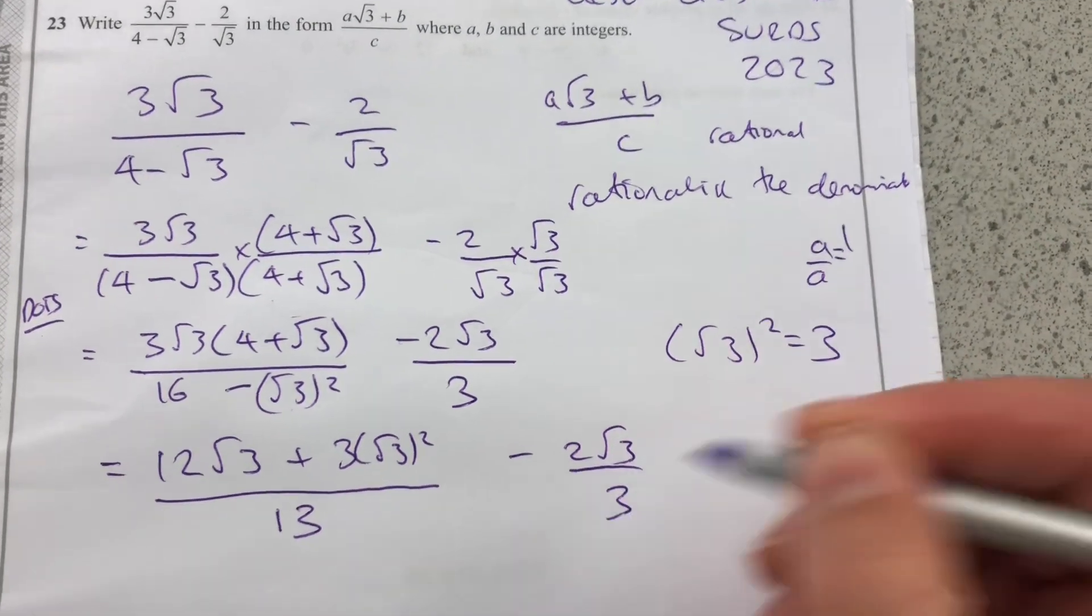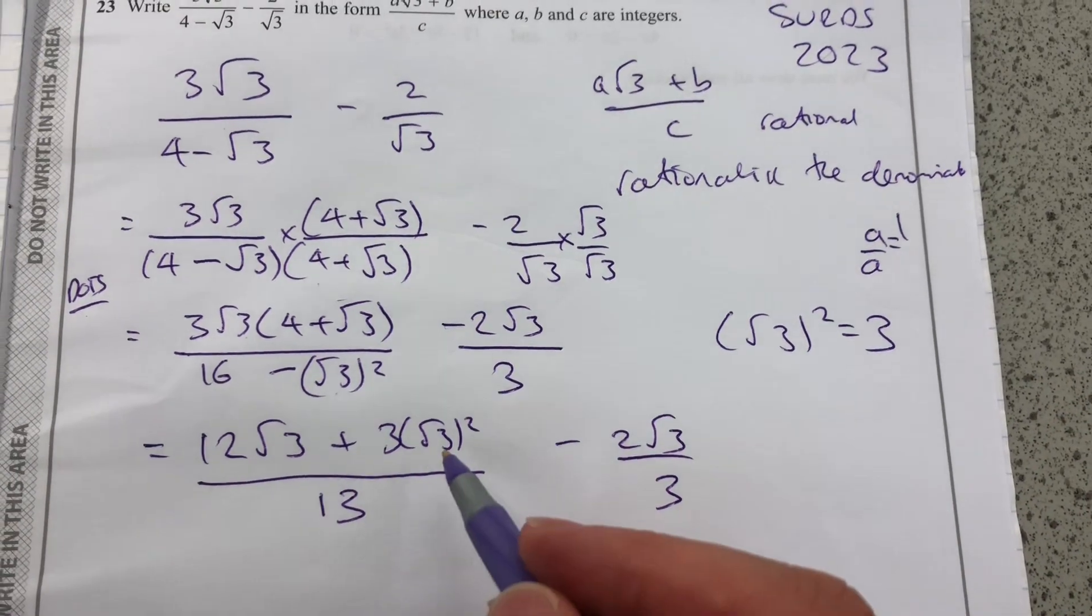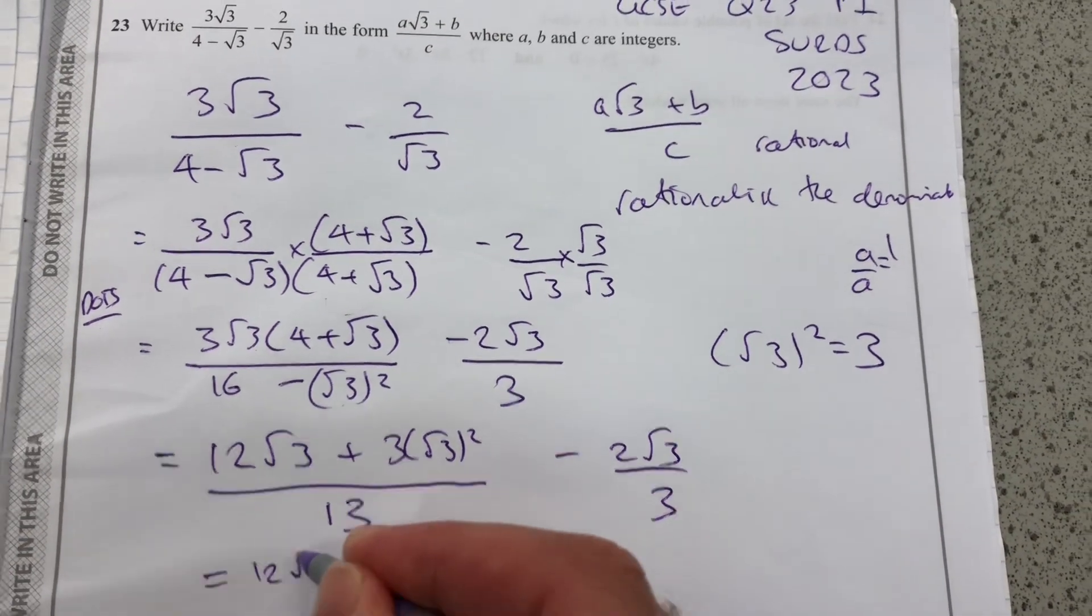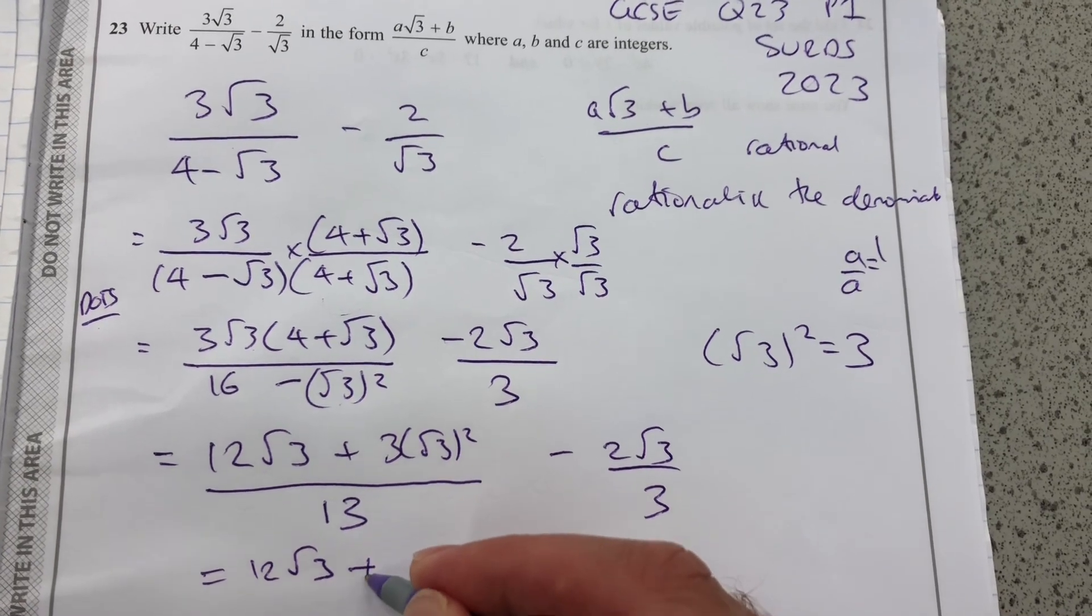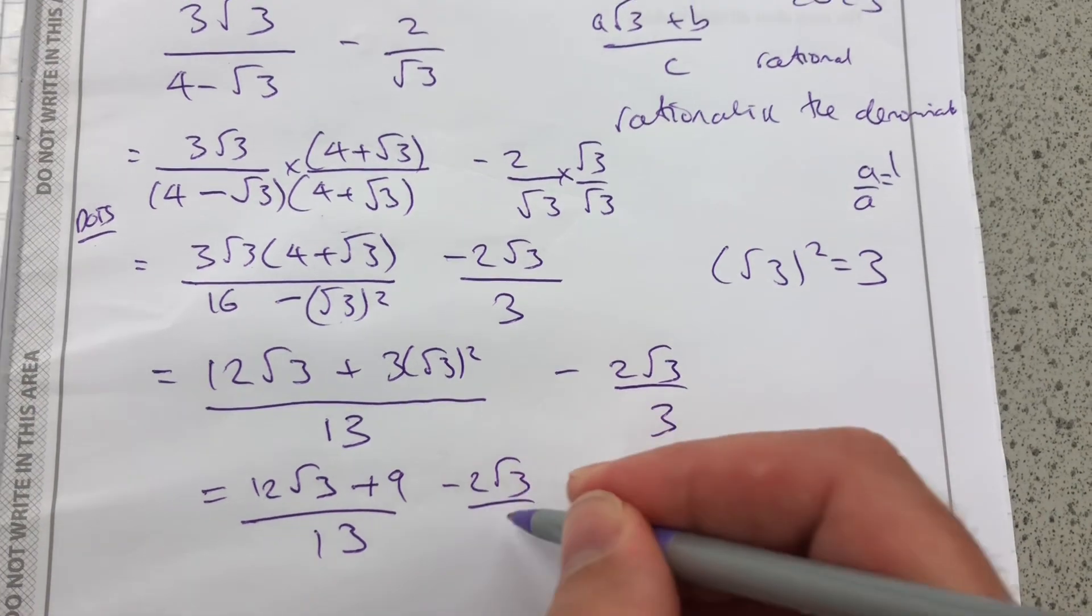Still got the 2 root 3 over 3. We're going to combine those fractions later. So we're going to have 12 root 3 plus 9 over 13, minus 2 root 3 over 3.